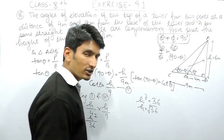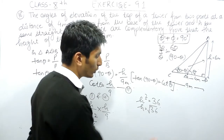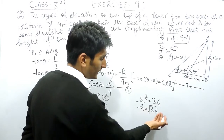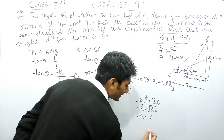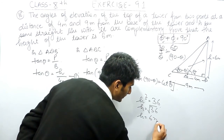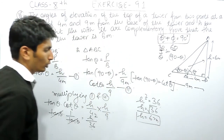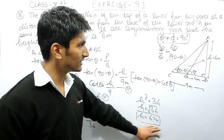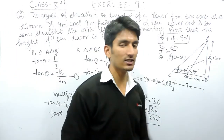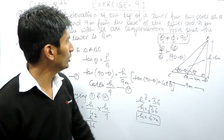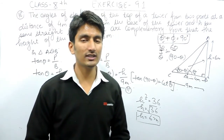To remove the square we take the square root of both sides. The right-hand side becomes h squared equals 36, and the square root of 36 is 6. So the value of h is 6 meters, which is exactly what we had to prove. This is how you can prove this last question of the exercise.